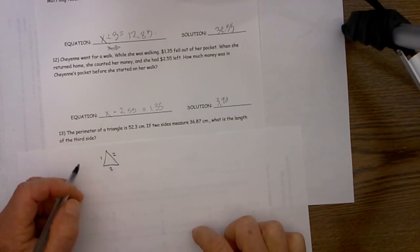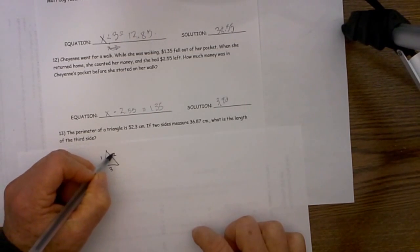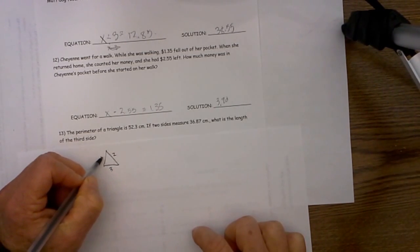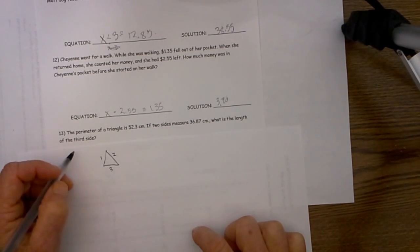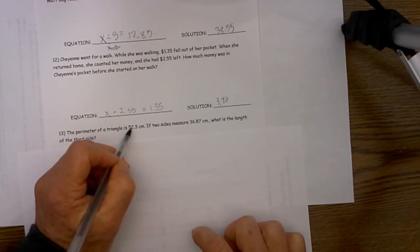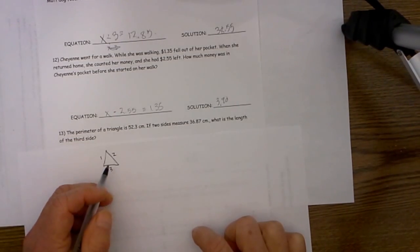To get perimeter of a triangle you add the length of the three sides so you have one length of this plus the length of two plus the length of three. Well the length of two sides is given and we have the grand total. So we will set this up.